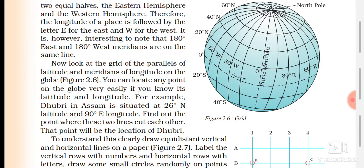Now look at the grid of parallels of latitudes and meridians of longitude. If you want to locate a place, using latitude and longitude together makes it very easy. For example, Dubri in Assam is situated on 26 degrees north latitude and 90 degrees east longitude.